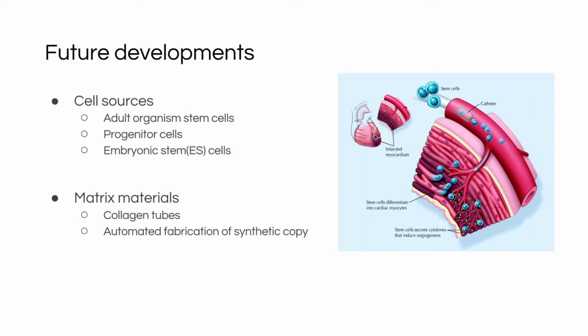There are some key areas for future development. One is cell sources for cardiac tissue engineering. Adult organism stem cells, obtained from bone marrow or fat plugs, can regenerate new myocardium. Another source is progenitor cells that reside in the heart, which can differentiate into functional cardiomyocytes to repair the heart. Finally, embryonic stem cells have the ability to form any type of cell in the body and can spontaneously differentiate into cardiac myocytes.